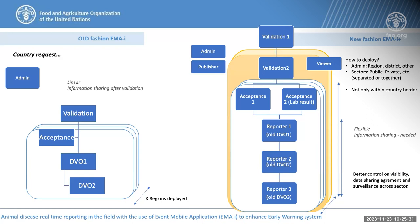We propose up to three reporters from the field — following the DVO1 and DVO2 idea, we now have up to three different people or groups who can report from the field. We have up to two acceptance levels as well as two validation levels. We also propose a viewer and publisher role to allow users from other workspaces and segments to share or view information, for example at a border level.